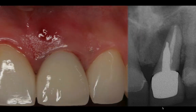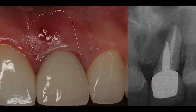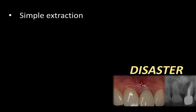Looking at the periapical radiograph and the clinical picture, there's a lot you can learn. You can assess the condition of the buccal plate. Given the extent of the infection toward the mesial and apical part of the tooth plus the draining fistula, you can probably assume that the majority of the buccal plate is now missing. How much? We're going to find out, but it's definitely a disaster — there's going to be a pretty significant defect in there.